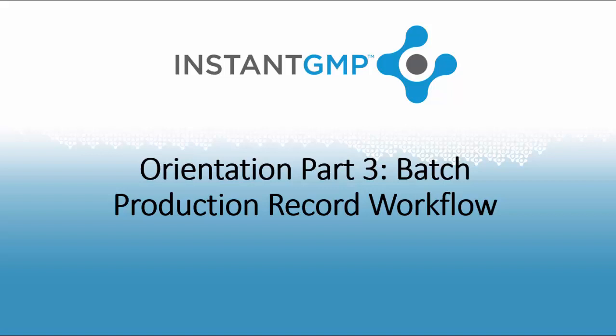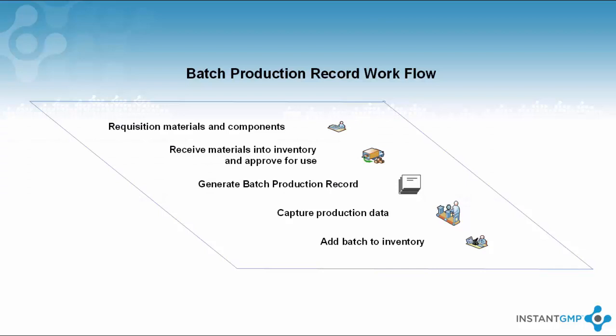Hello and welcome back to Instant GMP's orientation videos. This is video 3 of 3. In the previous video we gave an overview of the NPR process flow. This video will discuss the BPR process flow: ordering materials needed for production, receiving and approving those materials, generating a BPR from the manufacturing team, making entries in the BPR, and adding the final product to inventory for distribution.